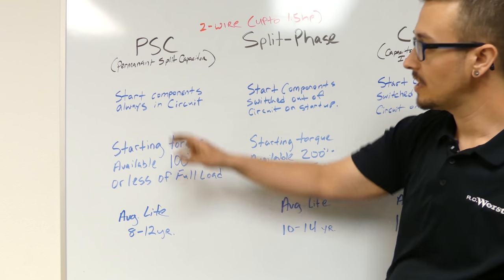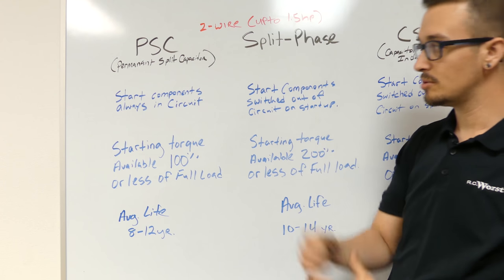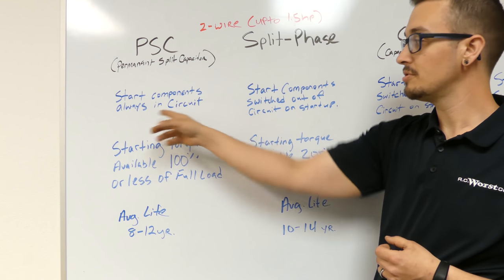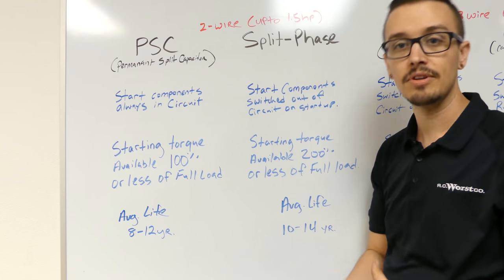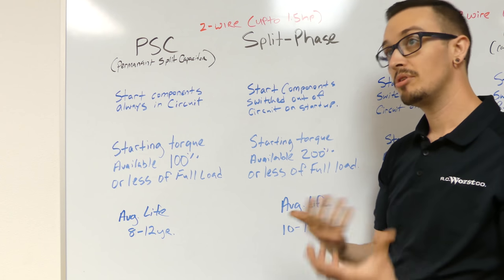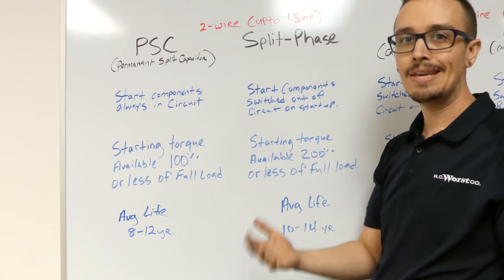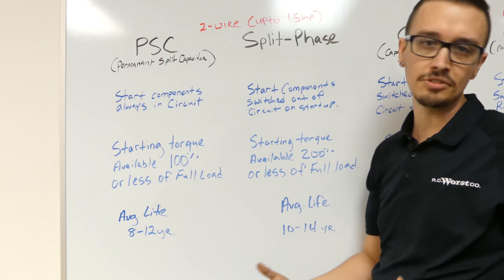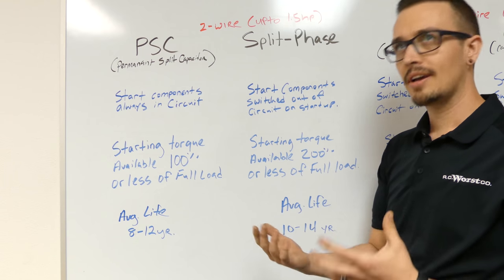So when it comes to two wire motors, you've got the permanent split capacitor and split phase. So with a PSC motor, your start components are always in the circuit. They never disengage, which can be good for reliability, but maybe not so good in terms of overall operation, efficiency, and longevity.